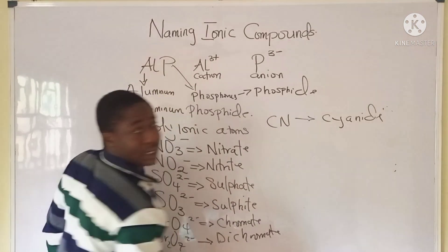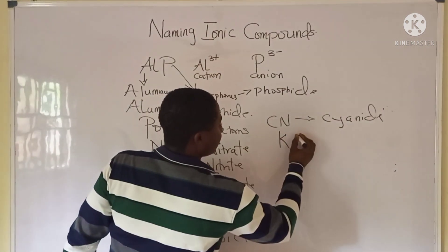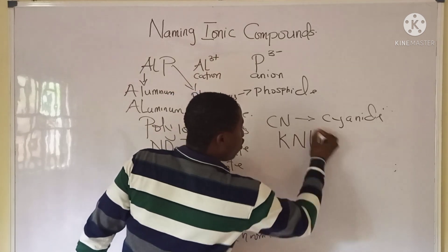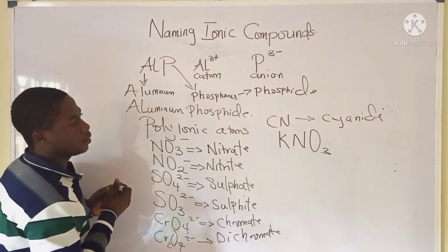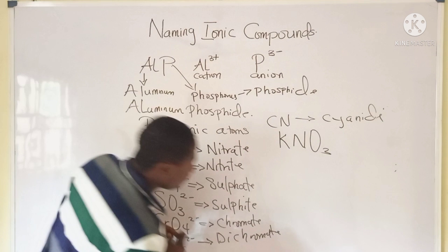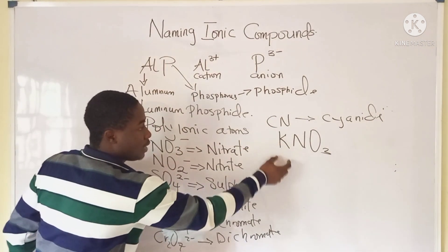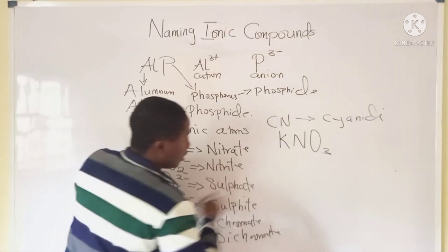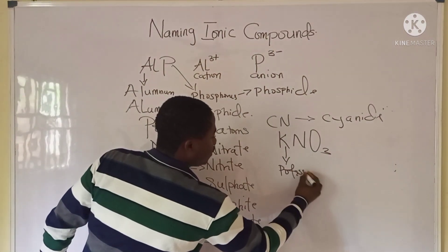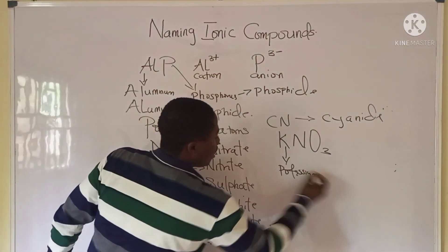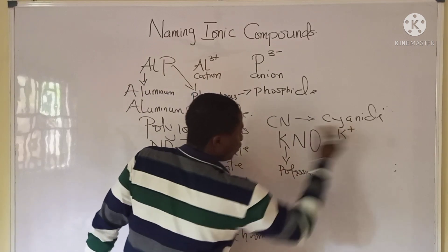Now let's quickly take an example using KNO₃. What is the name of this compound? Remember, potassium is an element here and potassium is positively charged — K⁺. And the NO₃⁻ is the polyatomic ion, which we call the nitrate radical. So the name of this compound is potassium nitrate.